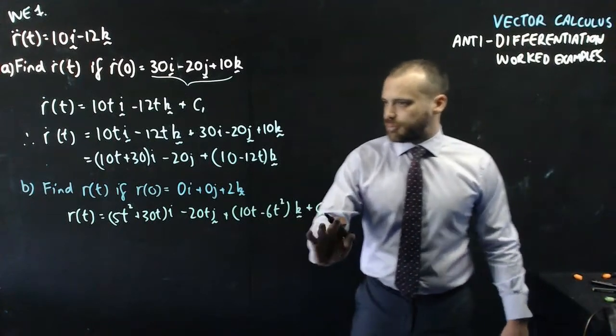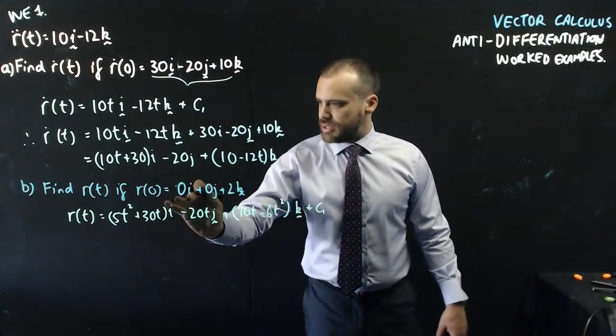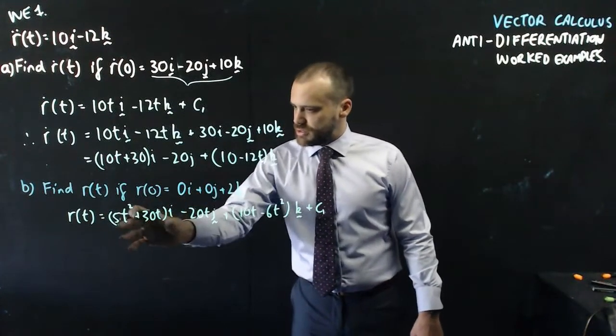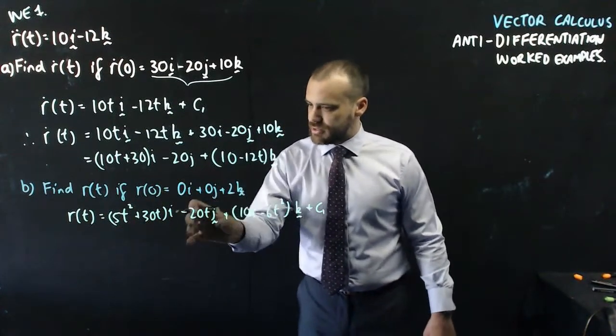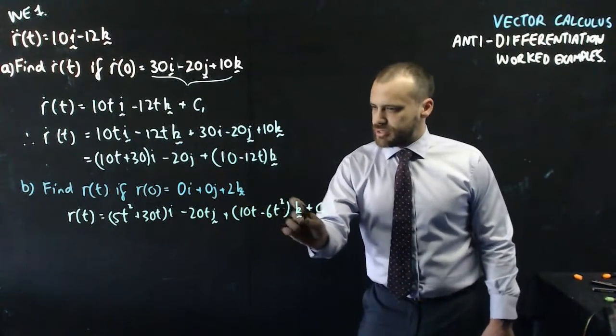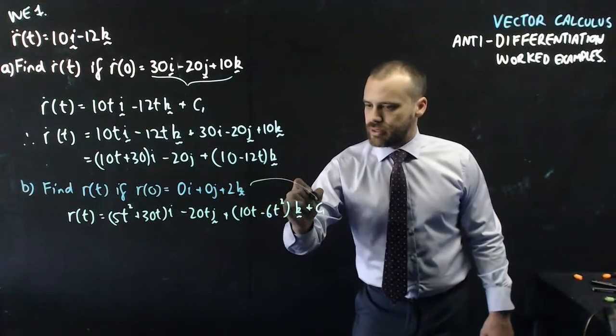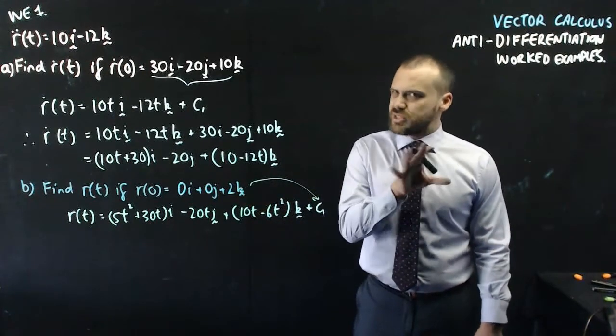Now in this case, our plus c is the initial. So if I put zeros in, I put a zero there, zero there, I get 0i. I put a zero there, I get 0j. I put a zero there, I get 0k. So this is my initial value here, and that's what's going to go in to there. Which is just simply 2k.